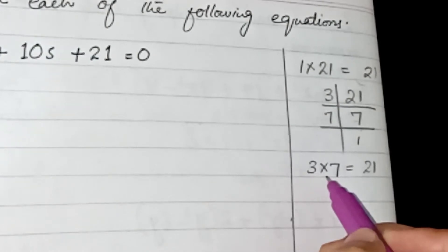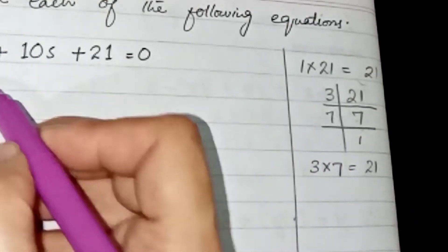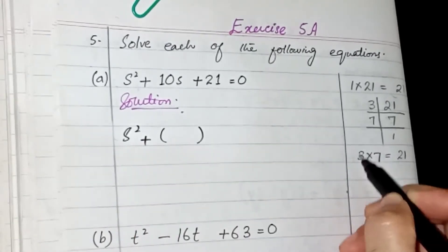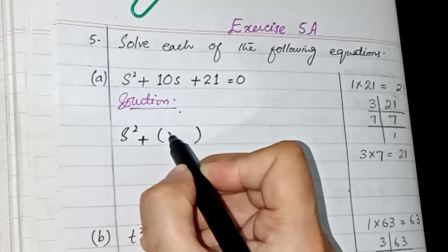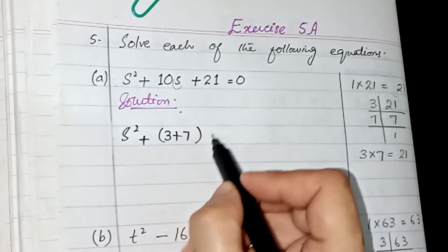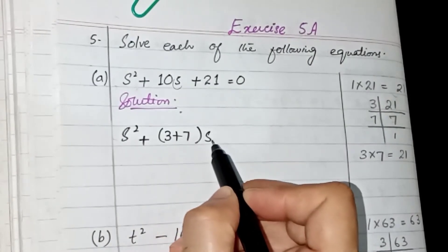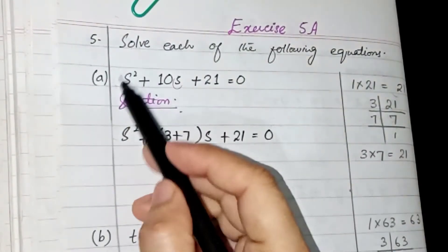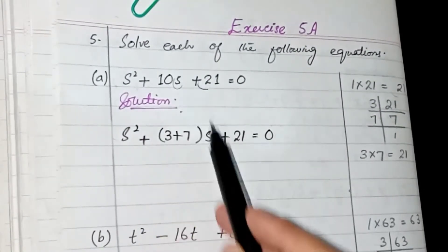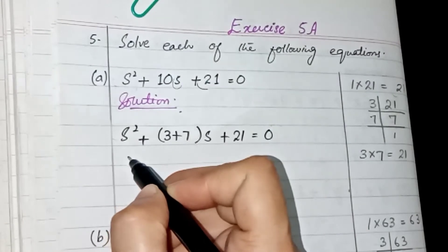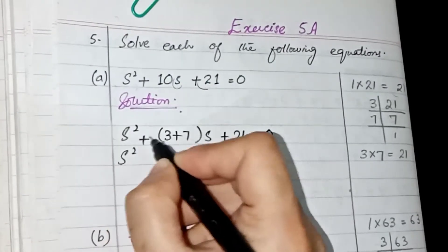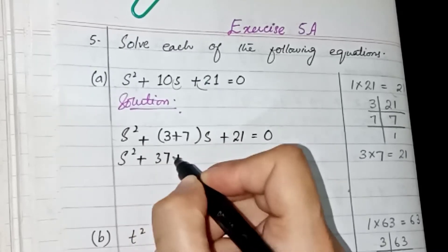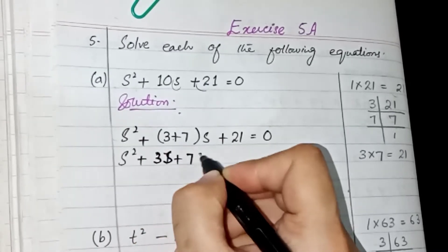We have only one pair of factors here, so we are going to add these two factors. Put a bracket and add these two factors — 3 plus 7 — and put this variable s outside the bracket. When we put s outside the bracket, it multiplies with both terms. We keep the first and last term unchanged and only split the middle term. So we get s squared plus 3s plus 7s plus 21.